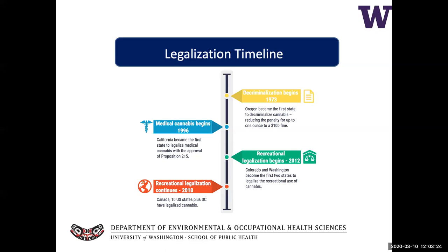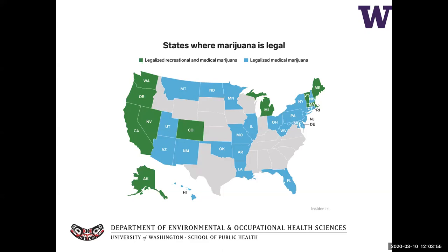Cannabis has long been classified as an illegal drug in the United States. However, the legal status around cannabis has been becoming progressively more permissive. In 2012, Washington and Colorado became the first states to legalize recreational use of marijuana. California then followed in 2016. Although cannabis is still considered illegal at the federal level, the trend of more permissive regulation has continued — there are currently 33 states, four permanently inhabited U.S. territories, and the District of Columbia that have legalized medical and/or recreational use of cannabis.